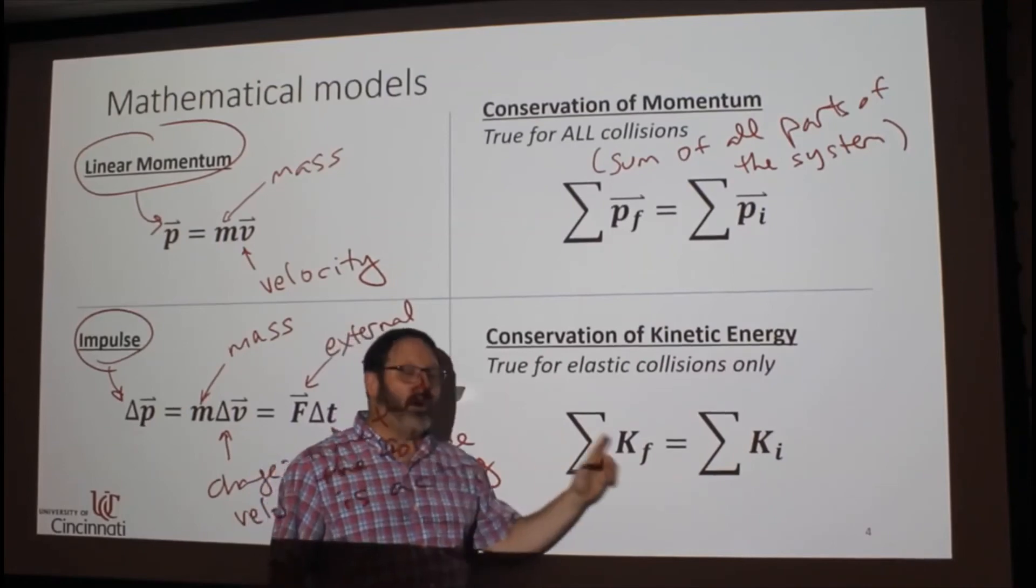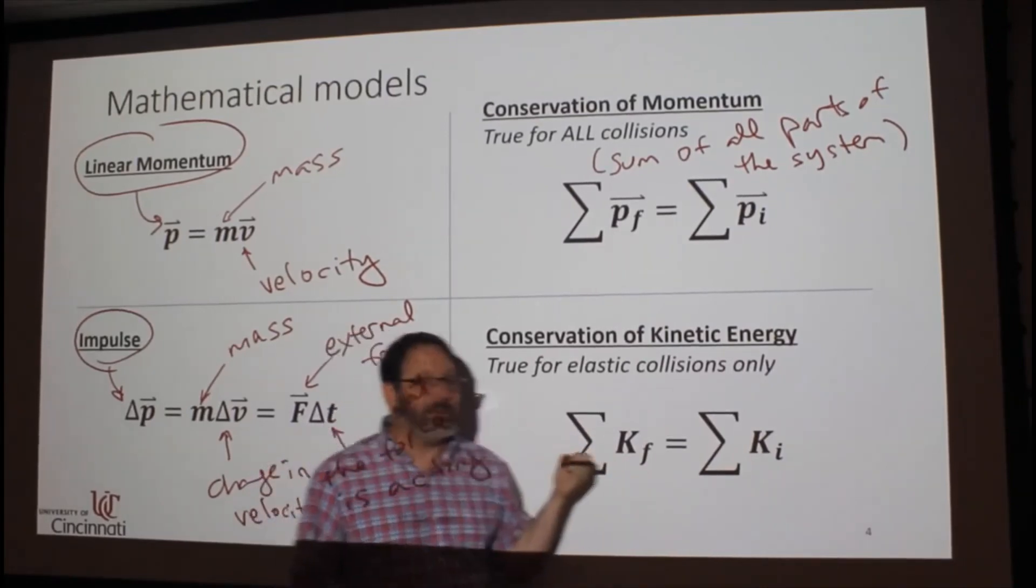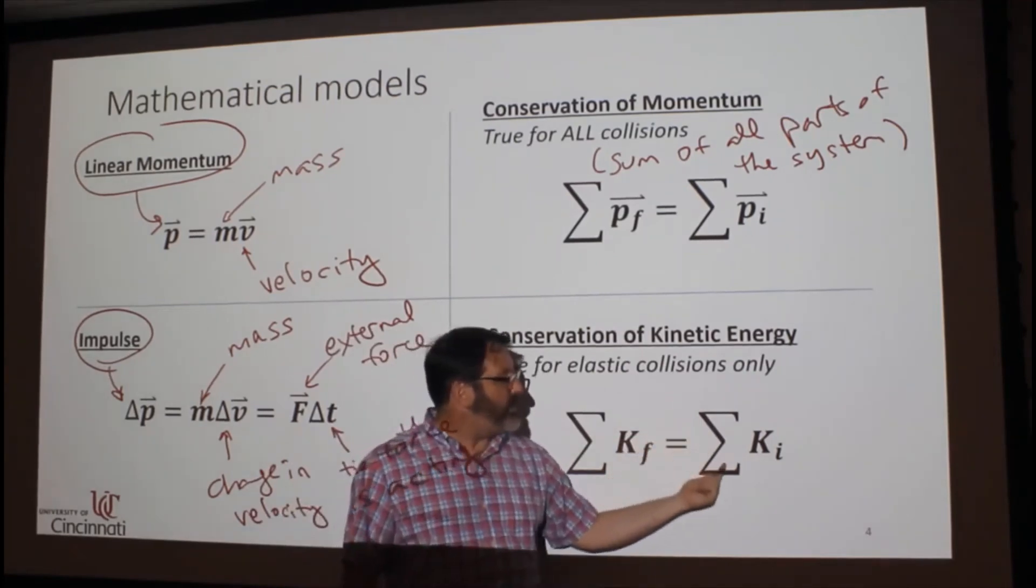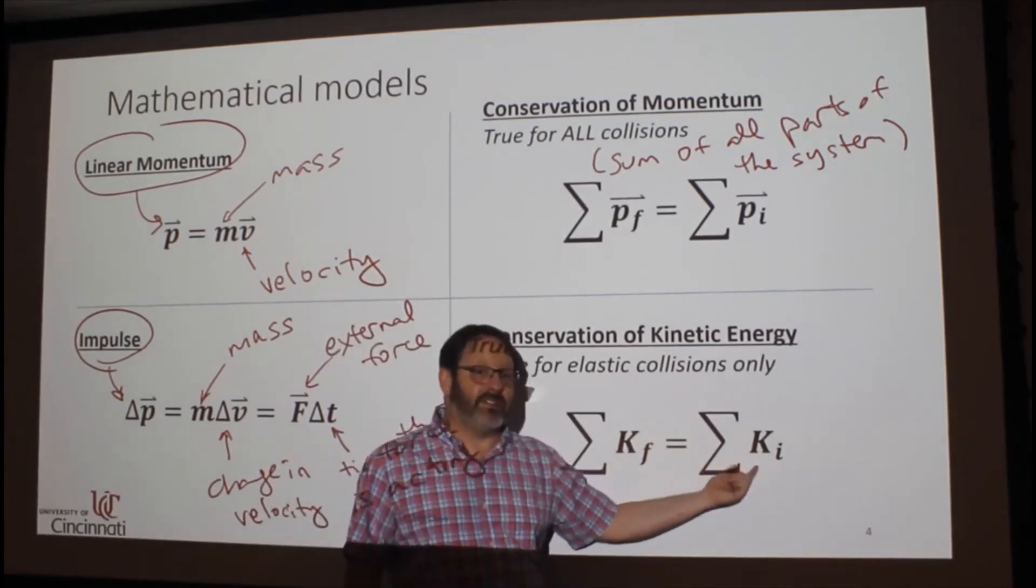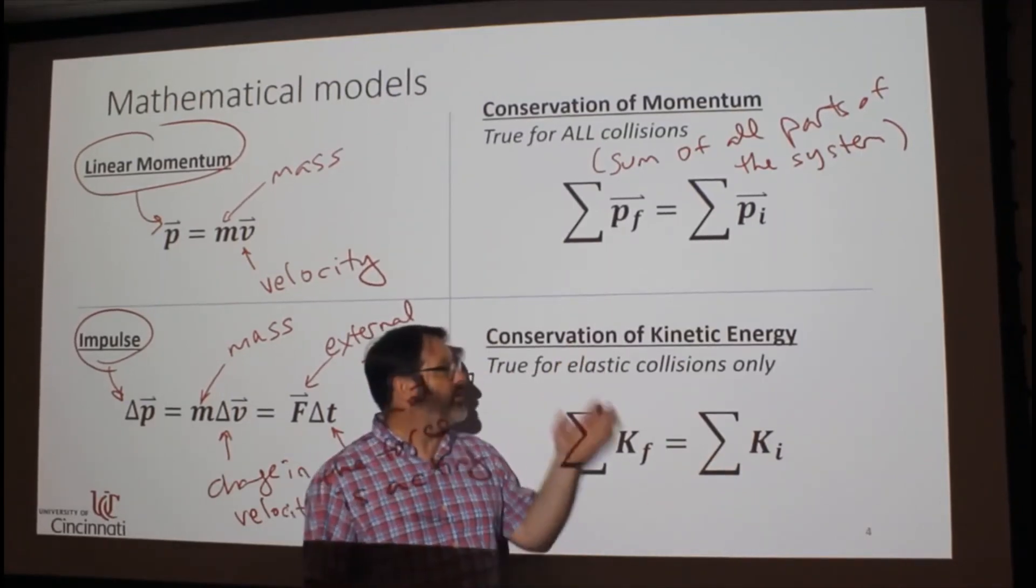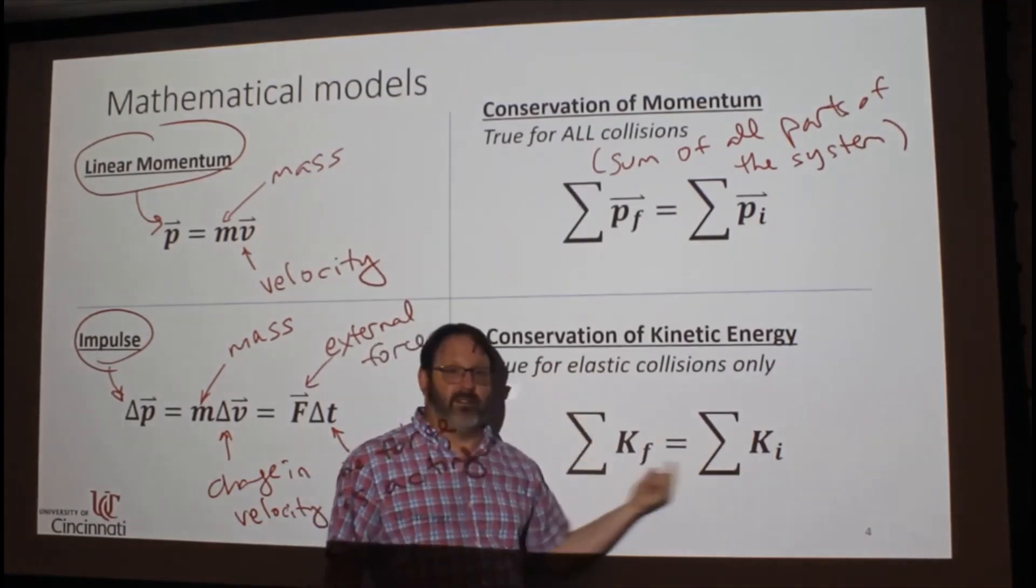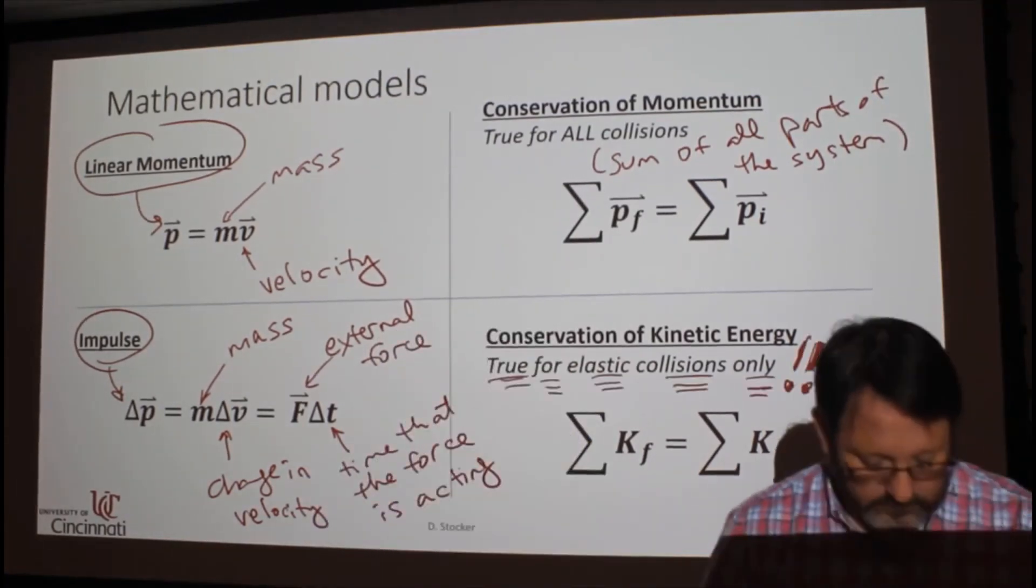If the sum of all of the final kinetic energies of all the parts of the system is equal to the sum of all the initial kinetic energies of all the parts of the system, then it was an elastic collision. Or if you know it's an elastic collision, if you're told that, then you can use this.